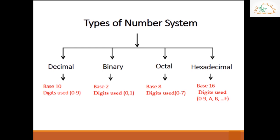All these number systems can be differentiated with the help of their base value. Each base value represents the maximum number of digits which can be used in that number system. For example, the decimal number system has a base value of 10, meaning the maximum number of digits which can be used is 10 — that is, starting from 0 to 9. Any number formed in this system will only use the digits 0 to 9.